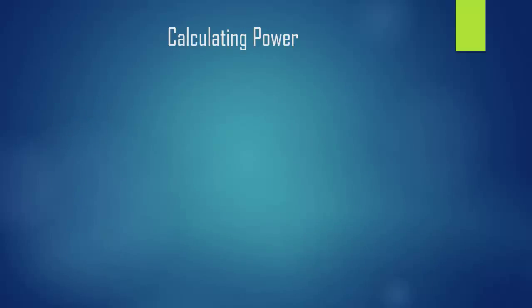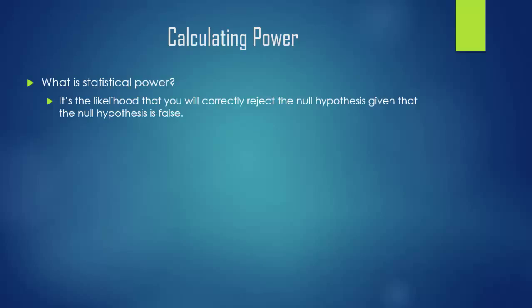Calculating Statistical Power. So what is statistical power? It's the likelihood that you will correctly reject the null hypothesis given that the null hypothesis is false. So basically, given the understanding that there is a major difference between your means, how likely are you going to detect that? Also, it's the probability that you won't make a type 2 error.